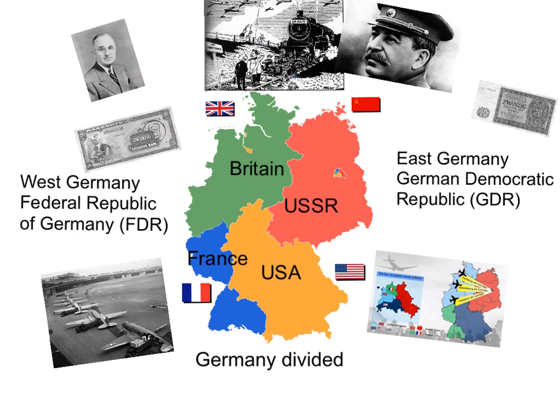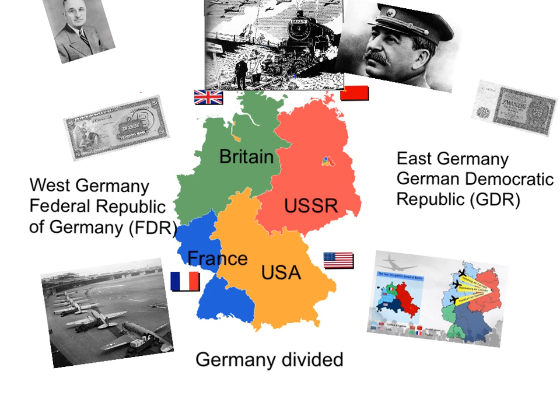In 1948, the West — Britain, France, and the USA — set up a German assembly to create a German constitution, a set of rules setting out how Germany will be run. This new Western-style government was based in Berlin, the capital of Germany, which in turn was based in East Germany. They also set up a new currency, which would be used in the West.